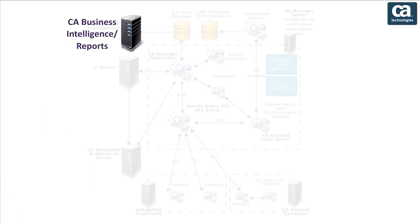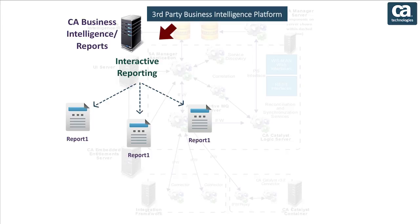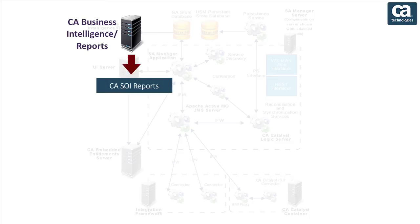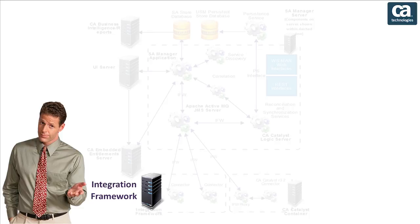Now we are going to look at the component CA Business Intelligence. CASOI implements Business Objects, which is a third-party business intelligence platform that provides interactive reporting. CA Business Intelligence hosts pre-defined CASOI reports, which include scheduled and on-demand reports.